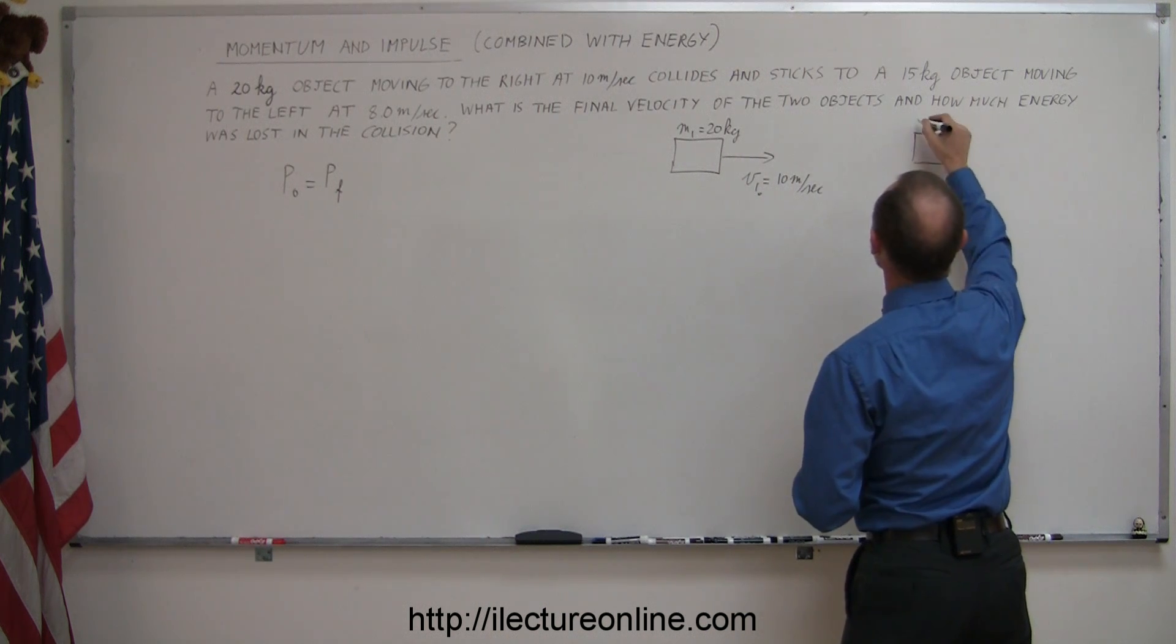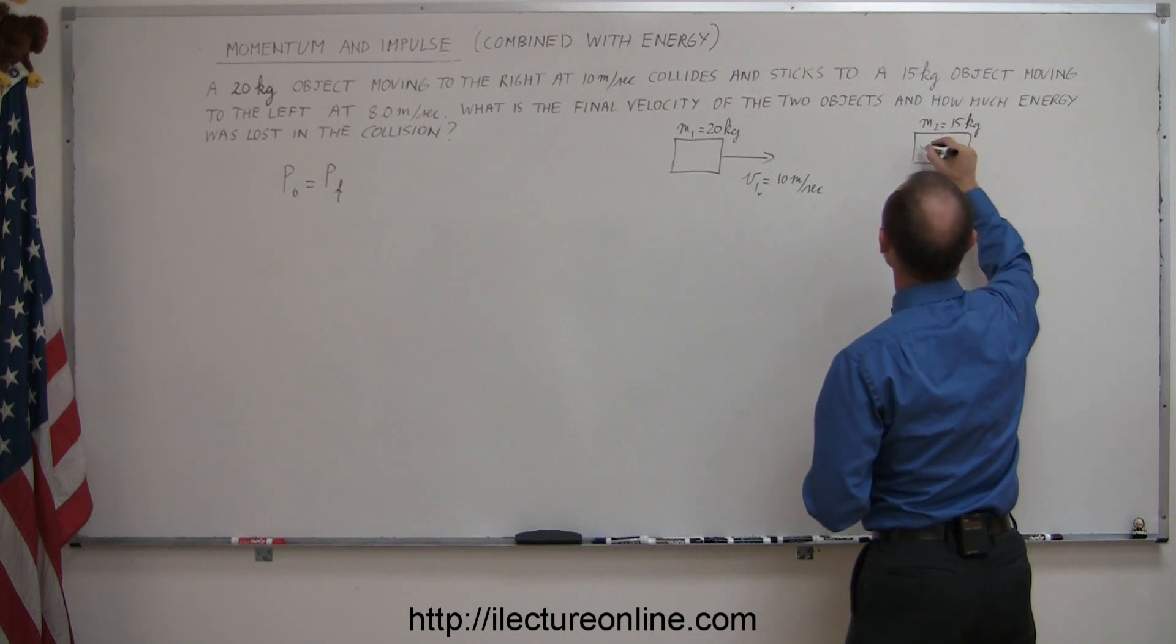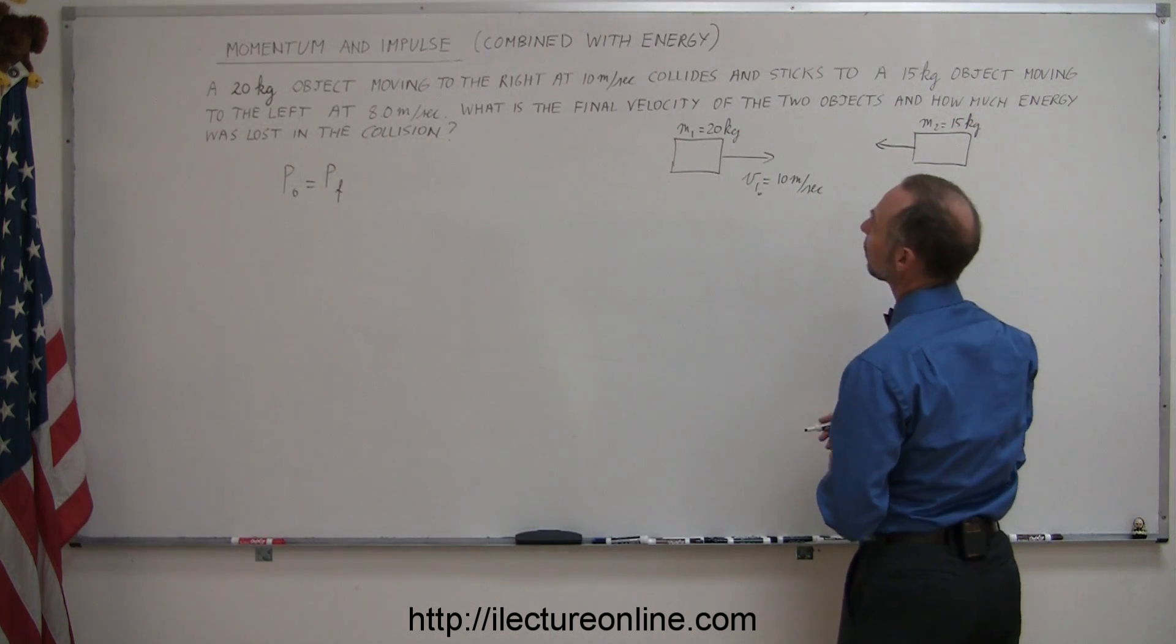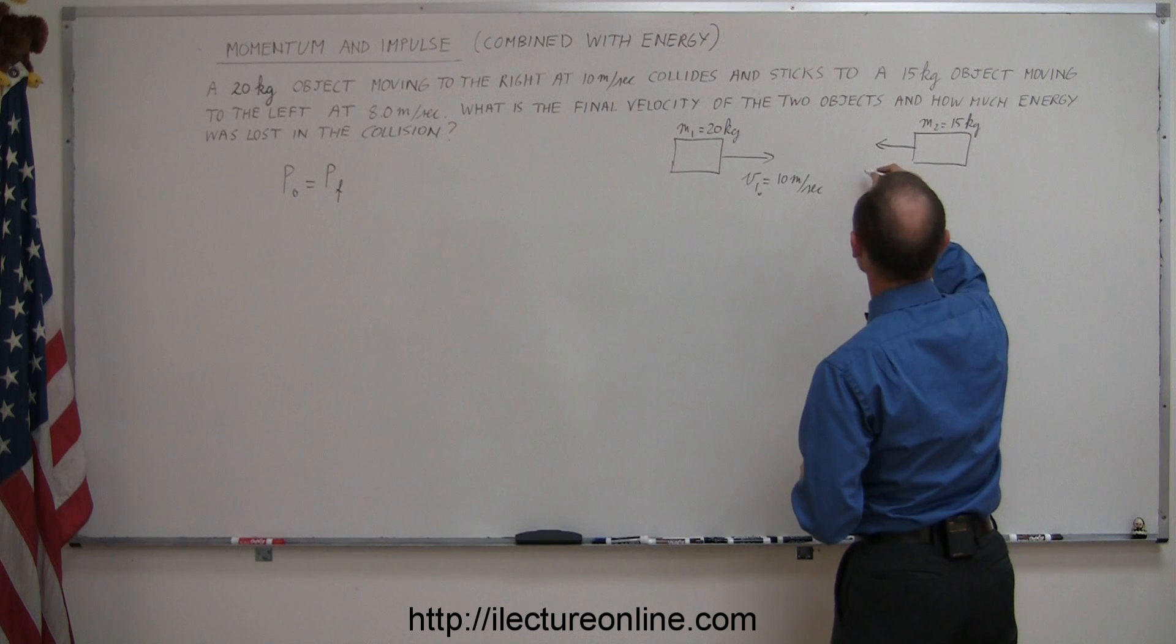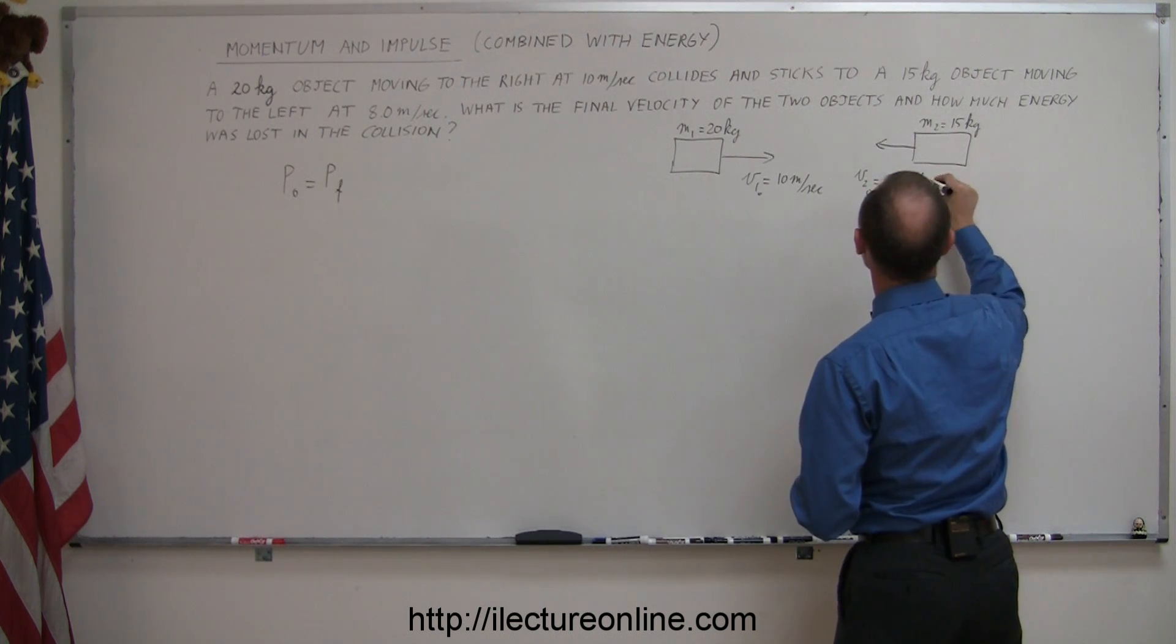We have a second object, which is a 15-kilogram object, so M2 is 15 kilograms, and it is moving to the left, negative velocity at 8 meters per second. So V2 initial equals to minus 8 meters per second.